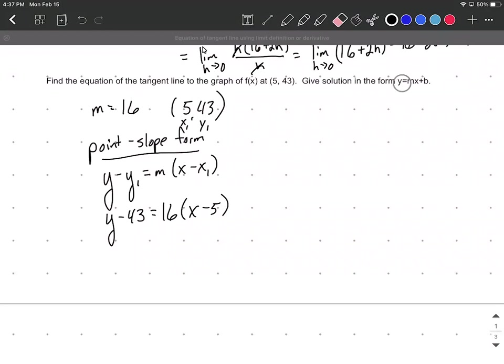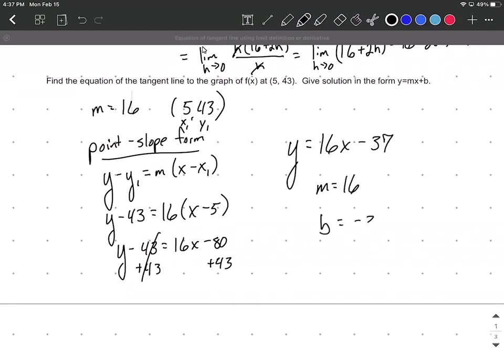We need it in y = mx + b form, so y is by itself. Distributing: 16x - 80. Adding 43 to both sides gives y = 16x - 37, where the slope is 16 and the y-intercept is -37.